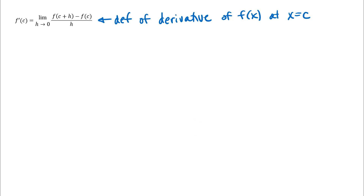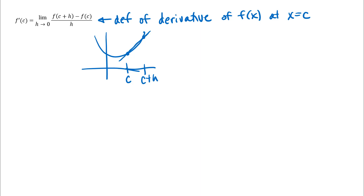The basic idea is that you've got some function, whatever that function might look like, and you've got some point x equals c. So f of c would be the output at that point. And then you've got some other point, c plus h — the x coordinate would be somewhere away from x equals c — and that point also has an output. The expression really is a slope calculation between those two points: change in output, f of c plus h minus f of c, divided by change in input. The denominator is really c plus h minus c; it's just that the c's cancel. Then the basic idea is you're going to let h approach zero, so you're letting that second point slide closer and closer to the first. What you get with that derivative is a limiting slope.